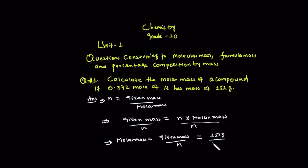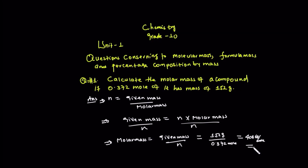So the given is 0.372 moles, and dividing that, we get 408.6 grams per mole. Molar mass is equal to given mass over n, so molar mass equals given mass over n.